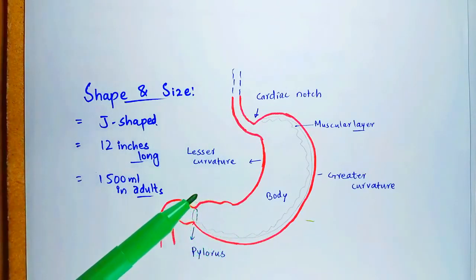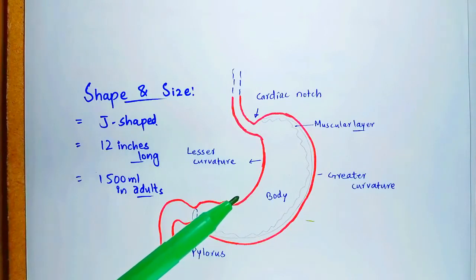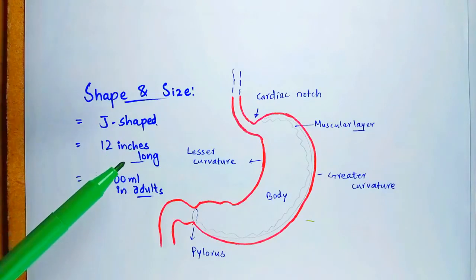The size of the stomach depends upon the amount of food inside. The stomach is capable of alterations in size. Normally, an empty stomach is 12 inches long.